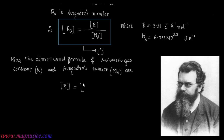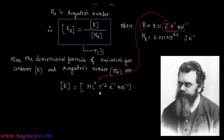The dimension of R is equal to ML²T⁻² Kelvin⁻¹ mol⁻¹. The unit of R is Joule per Kelvin per mole. In place of Joule we can write ML²T⁻².